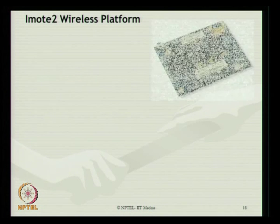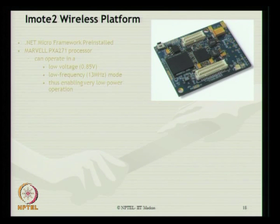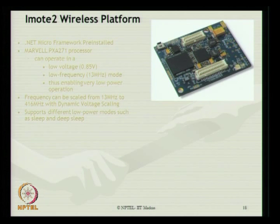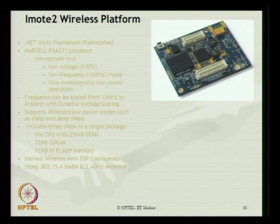The iMote2 wireless platform physically contains a .NET Micro Framework pre-installed. It has a Marvell PXA processor operating at a low voltage of about 0.85 volts, running at a very low frequency of 13 MHz, enabling operation at very low power. Frequencies can be scaled from 13 MHz to 416 MHz with dynamic voltage scaling, mostly useful for vibration acquisition in structures. It supports different low-power modes such as sleep and deep sleep. It includes three chips in a single package: a CPU with 256 KB SRAM, 32 MB SDRAM, and 32 MB flash memory. A Marvell wireless DSP co-processor is also installed, along with integrated IEEE 802.15.4 radio at 2.4 GHz with integrated antenna.